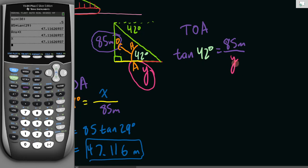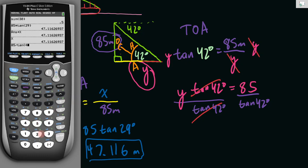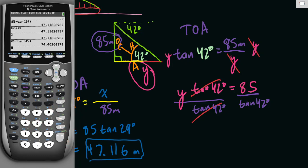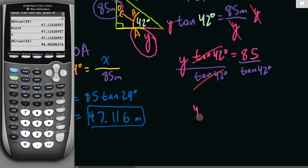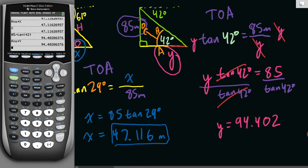This one's trickier because Y is in the denominator. Our first step is we're going to multiply both sides by Y to get Y out of our denominator. So we have Y times tangent 42 degrees equals 85. Then we're going to divide by tangent 42 degrees. So Y is 85 divided by tangent 42. This equals 94.402. I'm going to store that in alpha Y so that I've got it stored into my calculator variables.